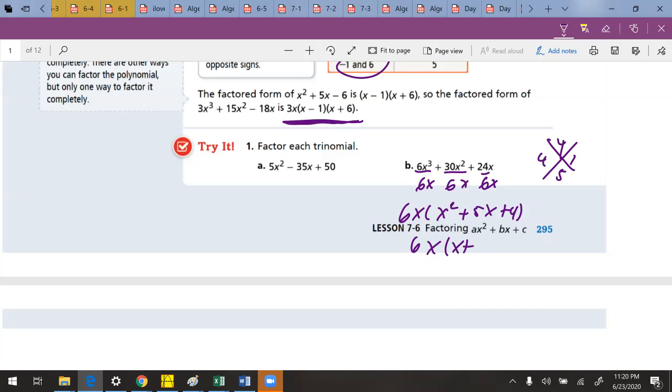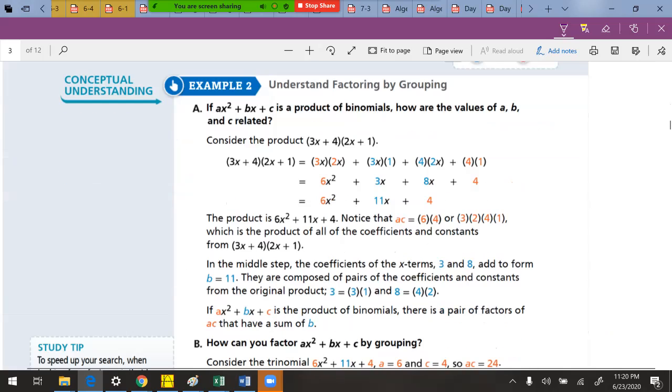6x, x plus 4, x plus 1. We got it. It's going to change things a little bit when we can't take anything out and there's going to be a number next to the x squared. What I like to do is use the magic x.